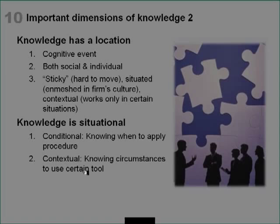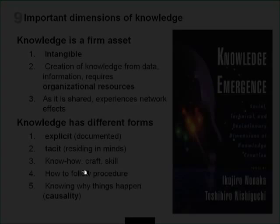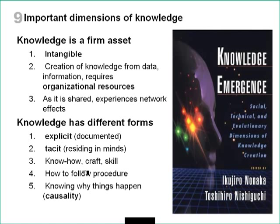Knowledge has a location. Knowledge is a firm's asset — for example, an electrical appliance firm knowing how to make the most efficient and cheapest air conditioner. Intangible means you can't touch it. Explicit knowledge might be knowledge about computer programs, sometimes written down, while tacit knowledge — the way tasks are done in the company — resides in people's minds and may not be written down.